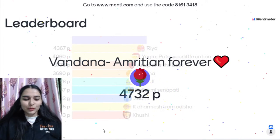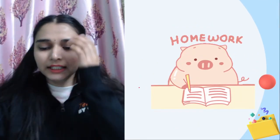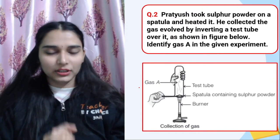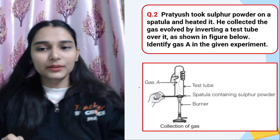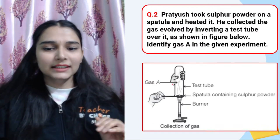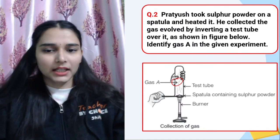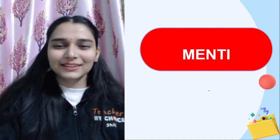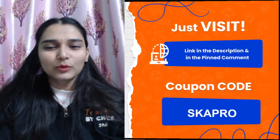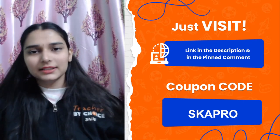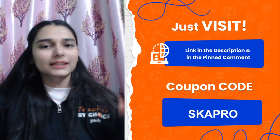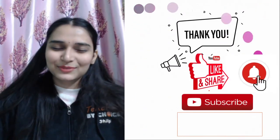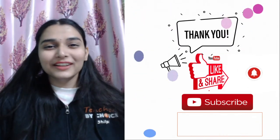Two homework questions to finish. One: Pratyush heated sulphur powder on a spatula and collected the gas evolved in an inverted test tube — identify the gas. That would be SO₂. Try to answer in the comments! Next time I'll take Mentee for all sessions so you can keep practicing quizzes. All the very best for your exams — don't forget to like and subscribe. See you next time, bye bye, and all the best for your social studies exam!